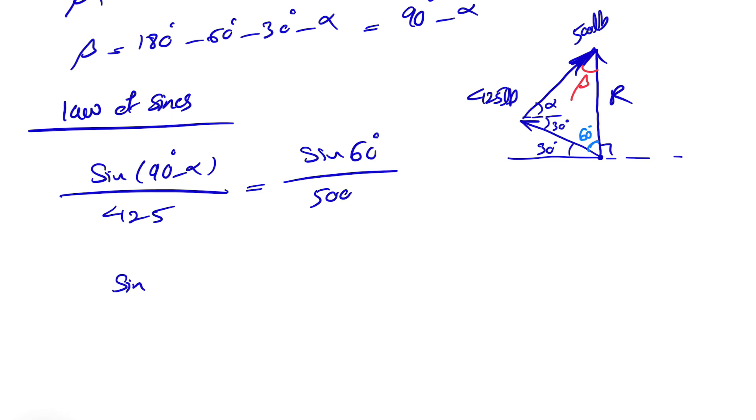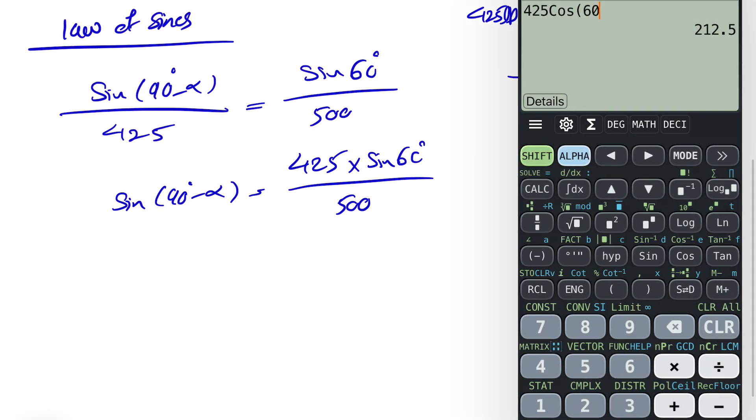So now we can find the value of sine of 90 degrees minus alpha, which will be 425 times sine of 60 degrees over 500. Let's figure this out.